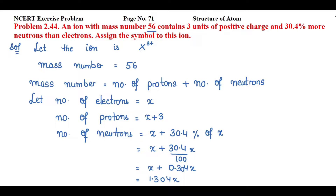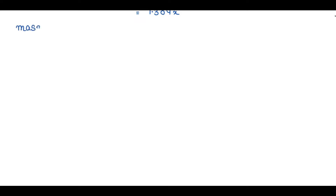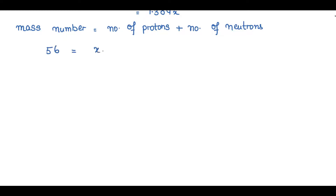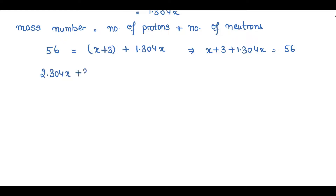Now we have number of protons and number of neutrons, so we put the values into the mass number relation: mass number equals number of protons plus number of neutrons. So 56 equals (x plus 3) plus 1.304x. Rearranging: x plus 3 plus 1.304x equals 56, which gives 2.304x plus 3 equals 56.